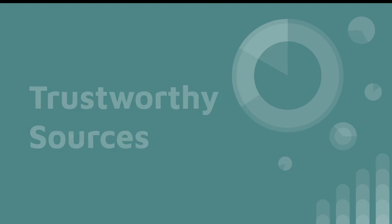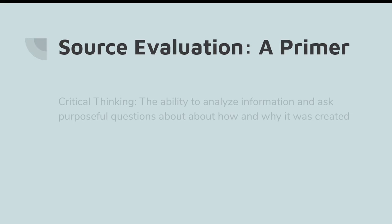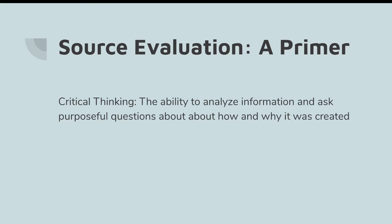This video is the first in a series from the Morris Library, discussing various types of sources you might come across in your research and how to evaluate them. If you're in a class where your instructor has assigned you a research project, one of these key skills is critical thinking — the ability to analyze the information you come across and ask purposeful questions about how and why it was created and whether it's trustworthy.